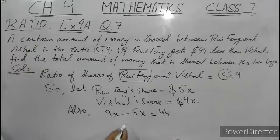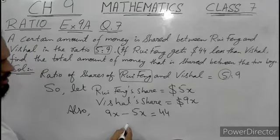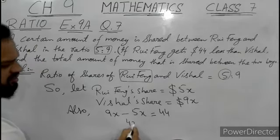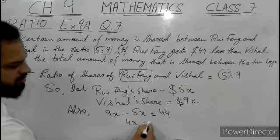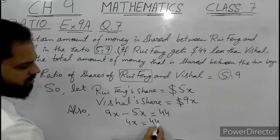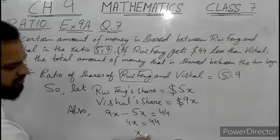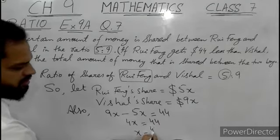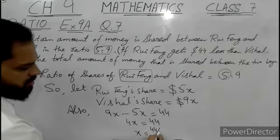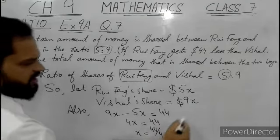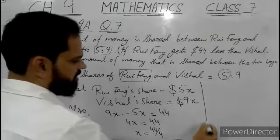9x minus 5x will become 4x. After dividing by 4 we will get x equals 11.